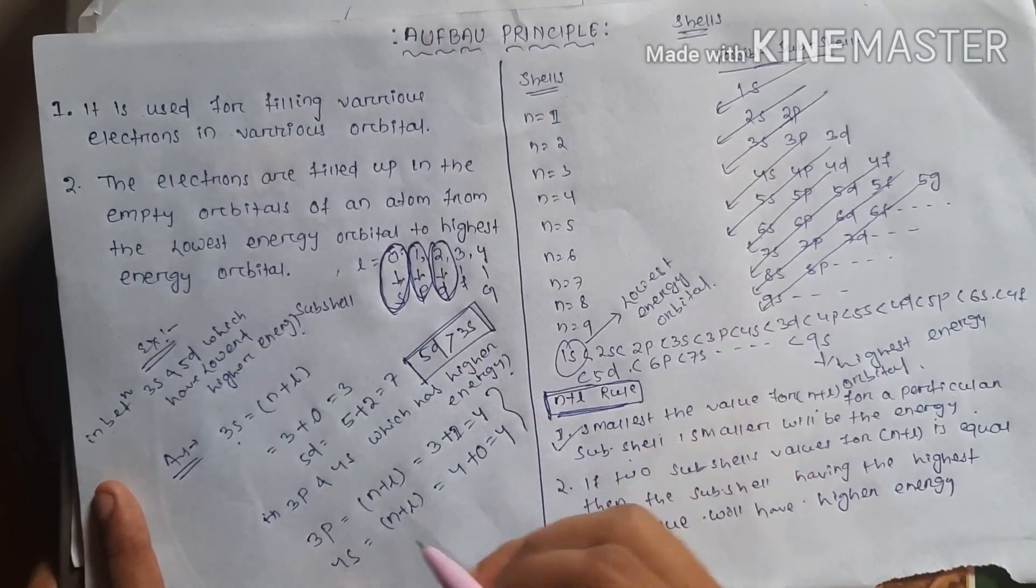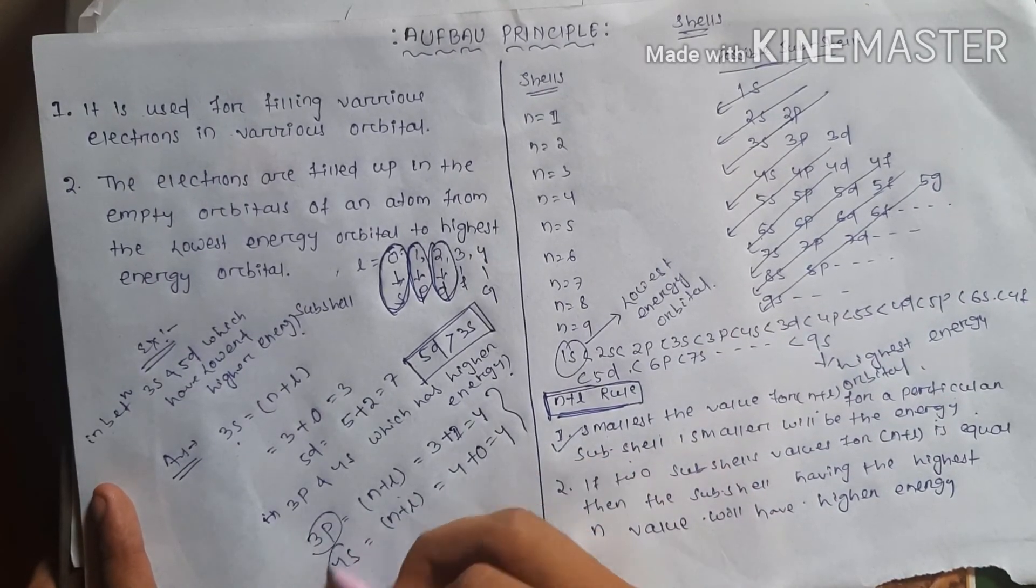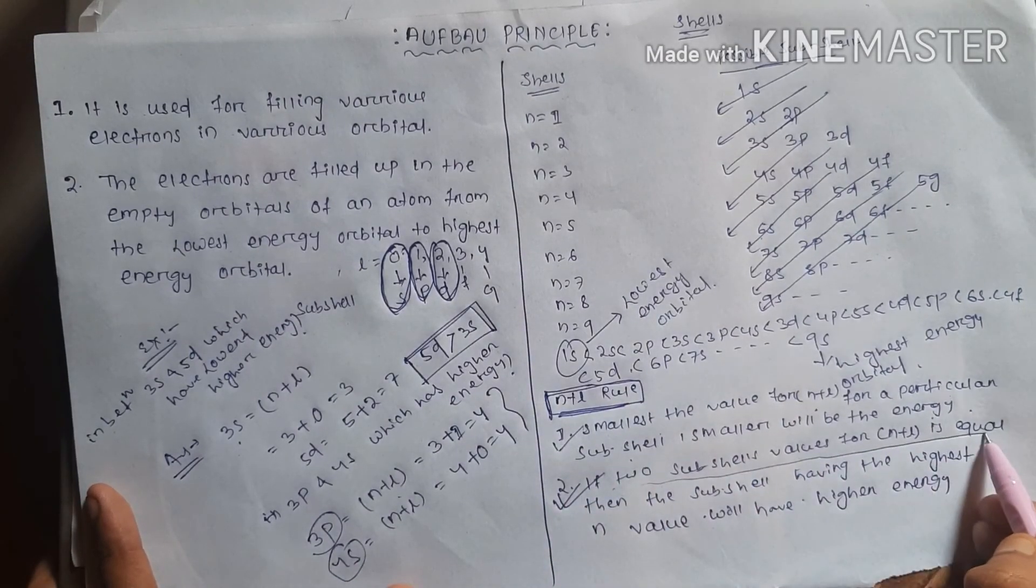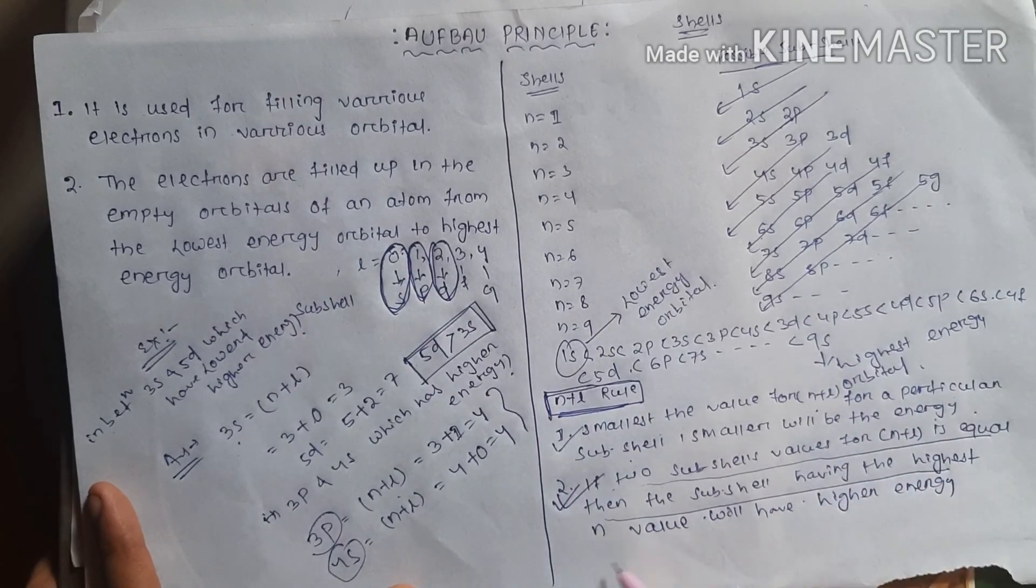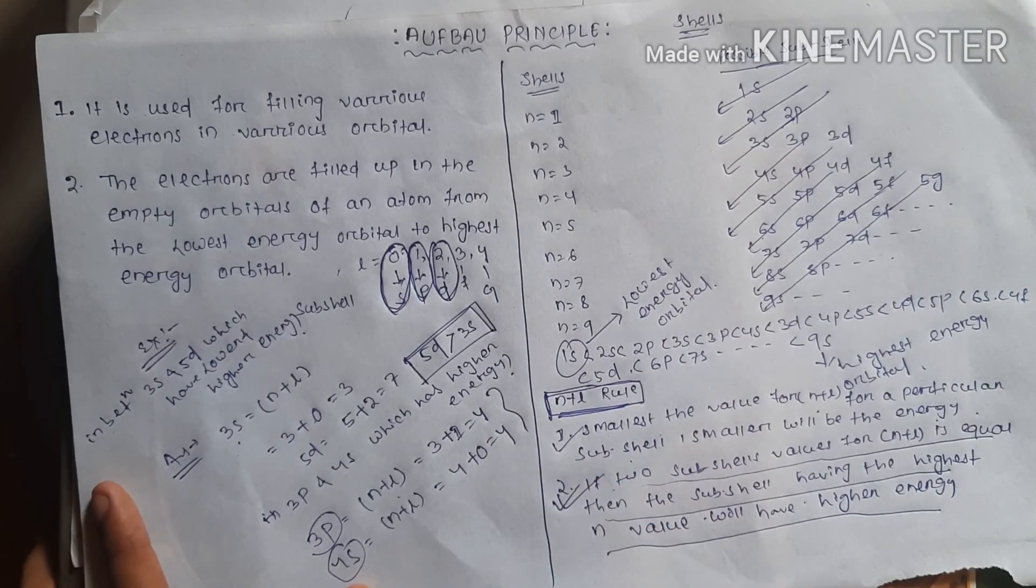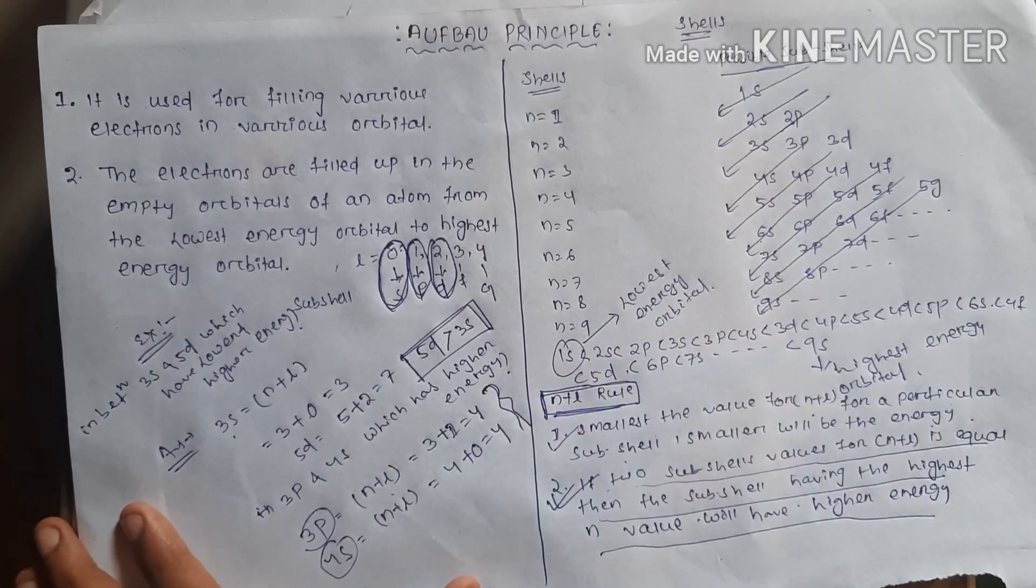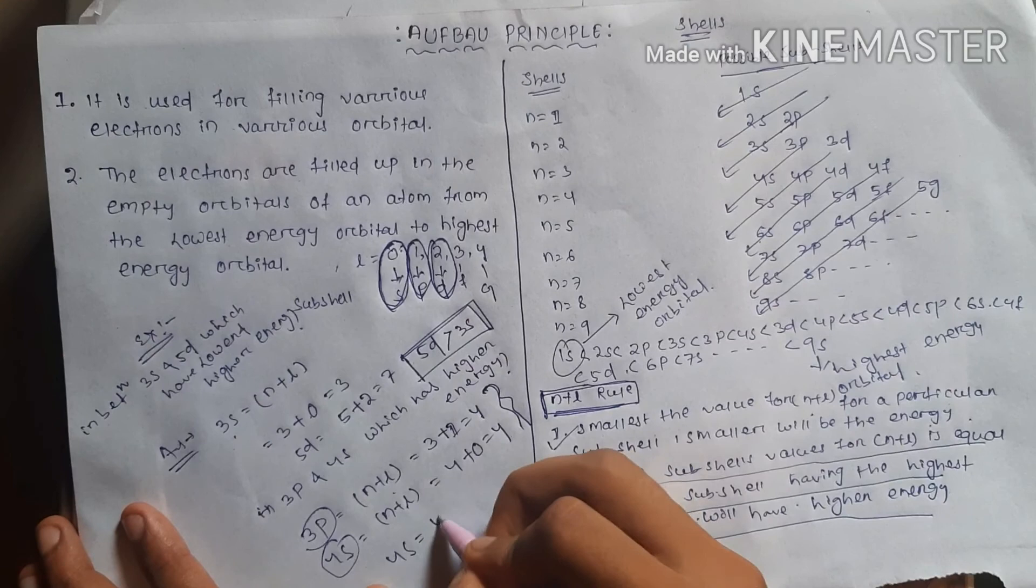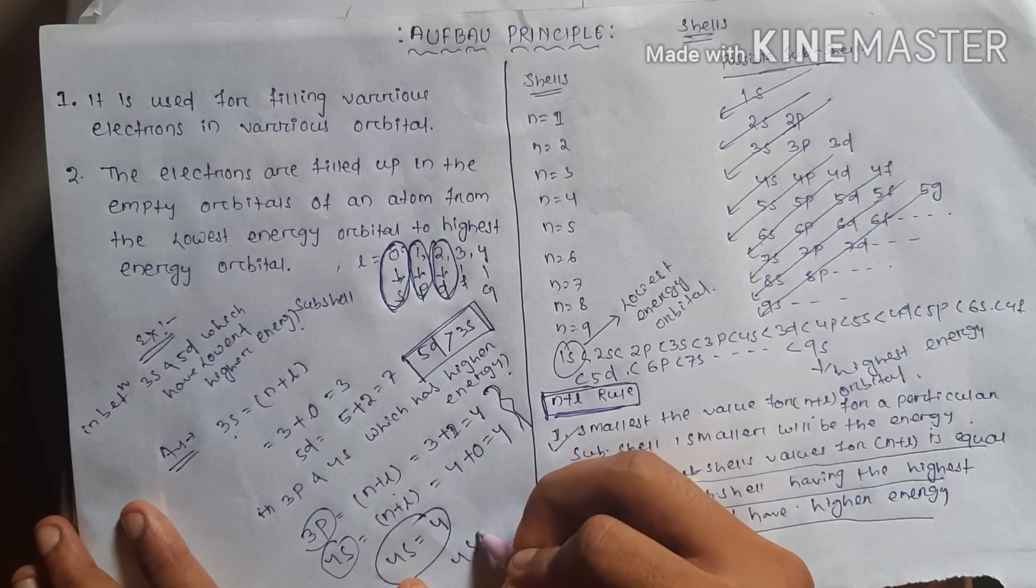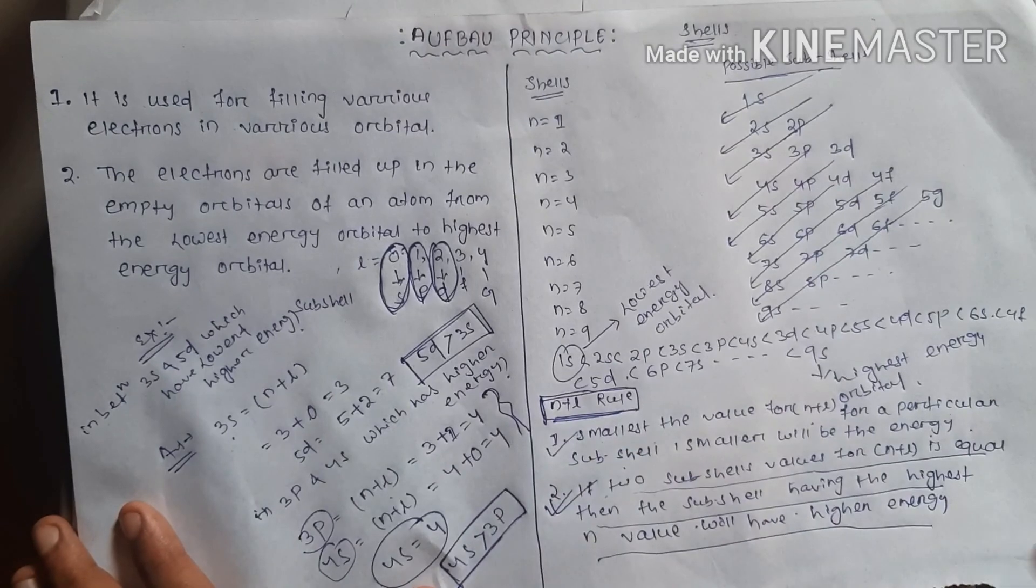Since 3p and 4s have equal n plus l values, according to the second case, if two subshells' value for n plus l is equal, then the subshell having the highest n value will have the highest energy. Since the n value of 4s orbital is higher, then 4s orbital is more energetic than 3p orbital. That is the whole concept of Aufbau principle.